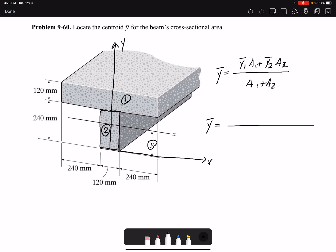Y bar 1: the centroid of a rectangle would be in the center, so I have 240 and then half of 120, so 240 plus 60 would be 300. Y bar 1 is 300 millimeters.